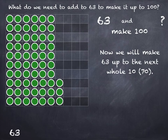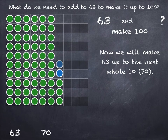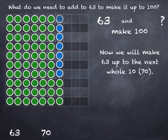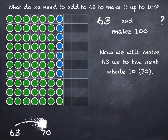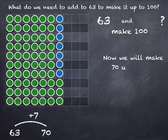3 and what make 10? That's 7 — 3 and 7 make 10. So 63 plus 7 takes us to 70.